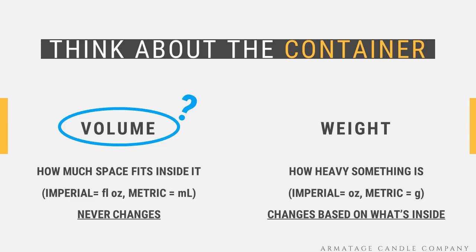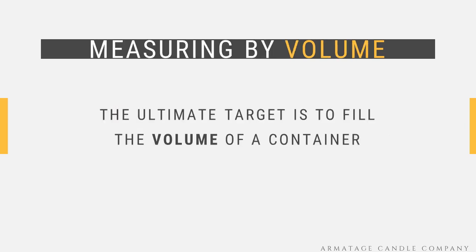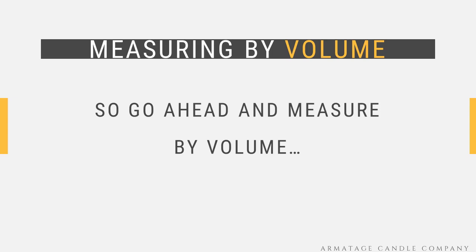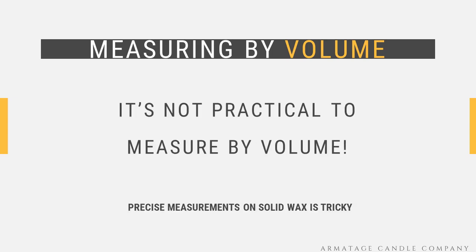Let's start by looking at how we can figure out the wax based on container volume, since that seems to be obvious. Remember, our ultimate goal is to fill the volume of a container with wax, so is there any math to figure out at all? Well, not really. It is a true statement to say that an 8 fluid ounce container needs 8 fluid ounces of wax. Volume never changes, and there isn't anything mysterious about how wax works. So we can go ahead and start measuring out volumes if we want to, and just kind of be done with this entire video.